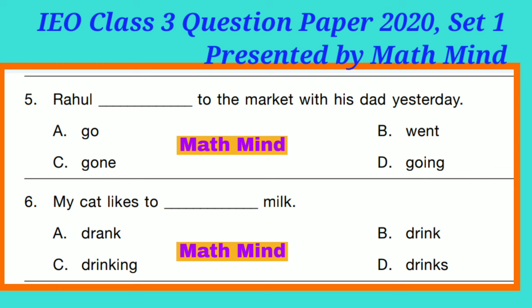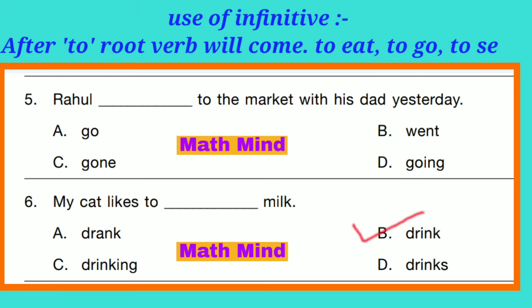Question 6: 'My cat likes to dash milk.' Option B is correct: 'to drink milk.' After 'to,' the root verb will come — to drink, to eat, to go.